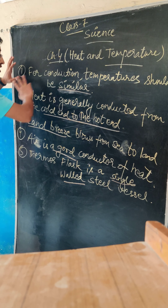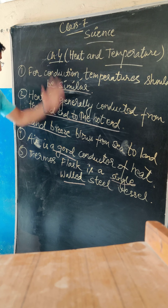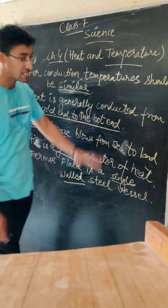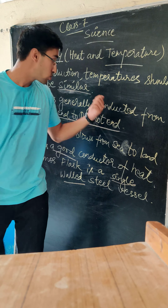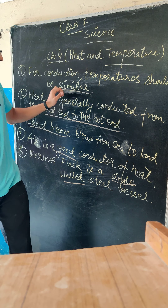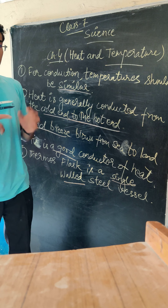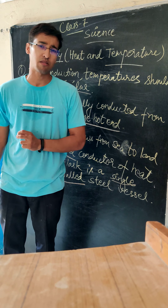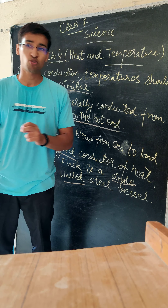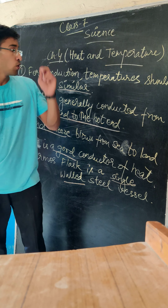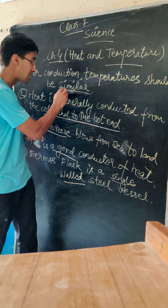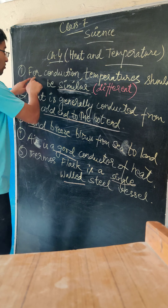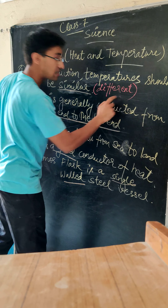I have seen all the lines and noted some underlined terms. In this exercise, we have to correct the wrong sentences. For conduction, the temperature should be different — not similar. That is the correct condition. When we have the conduction process, the temperatures should be different.